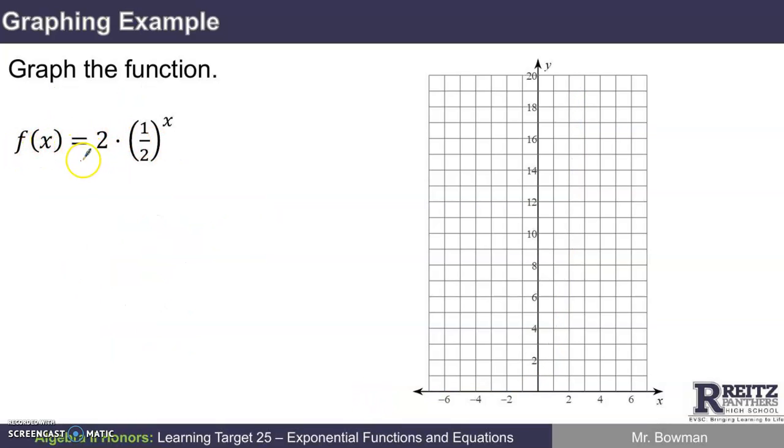Here's another example. F of x is two times one half to the x power. Here a is two and b is a half. Let's make a table of values. X and f of x. Just like before, I'll pick zero, one, two, and I'll go back and hit a couple of negative x's as well.